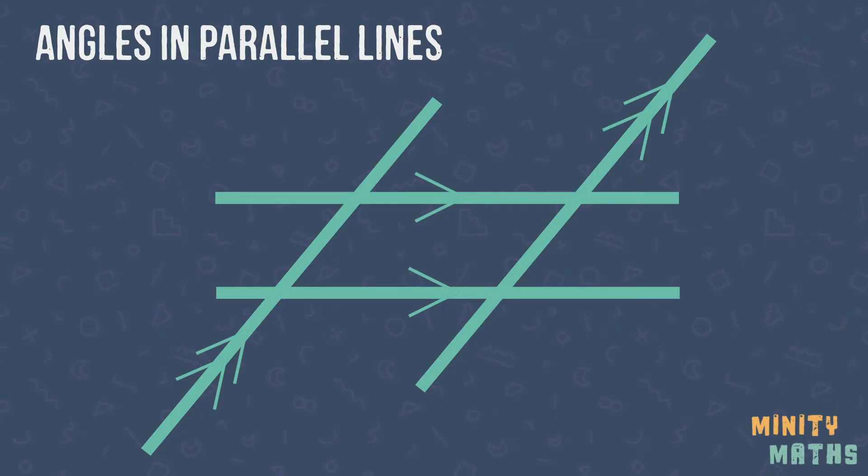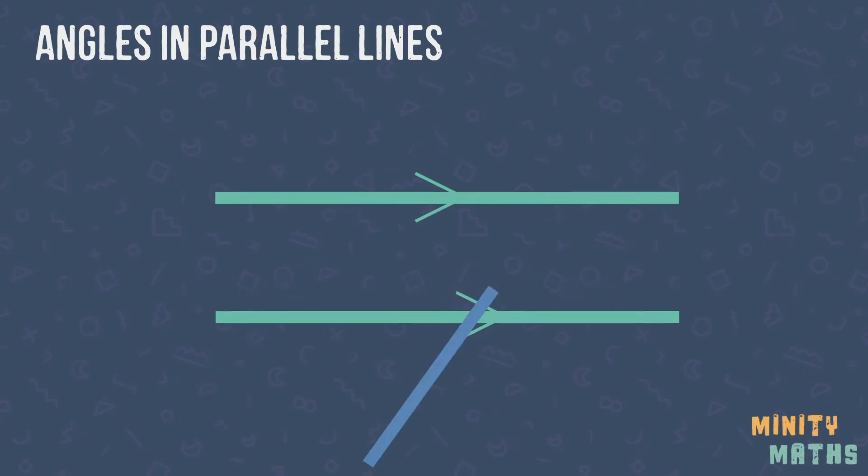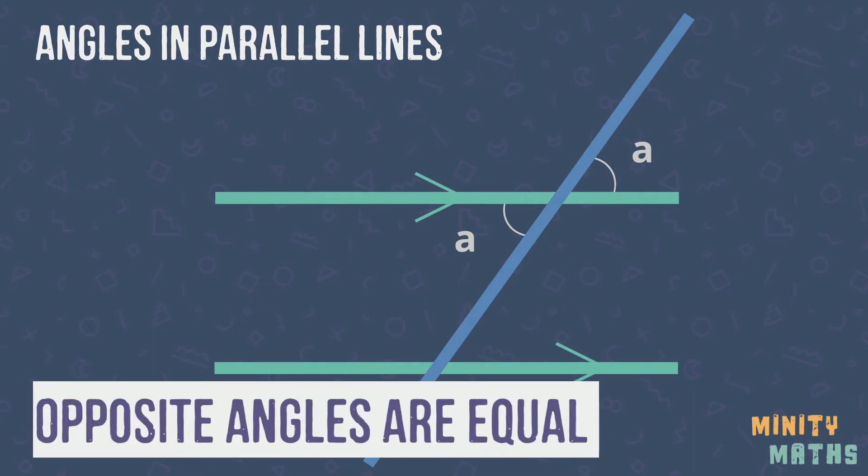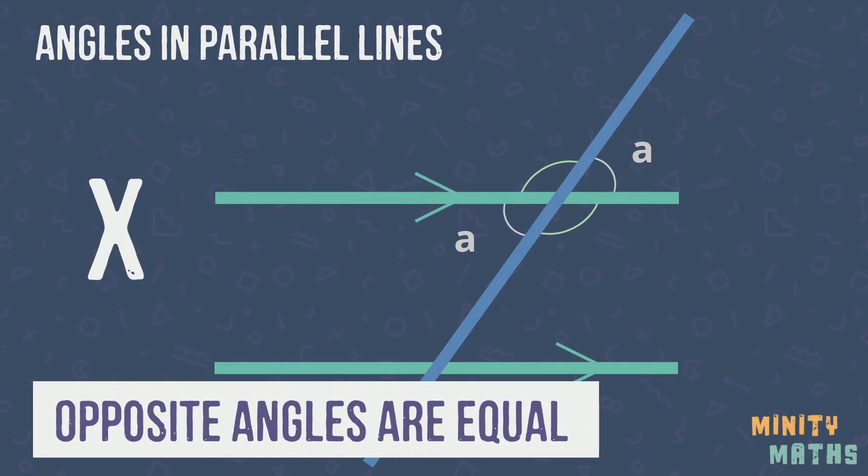When a line crosses two parallel lines, special angles are formed which have particular names and properties. Angles that are opposite each other are always equal. Notice the two angles labelled A are equal and the two angles labelled B are equal. These are called opposite angles, or more informally x angles. These angles can also exist without a pair of parallel lines. Here is an example.